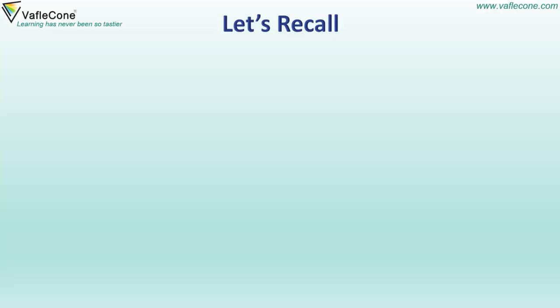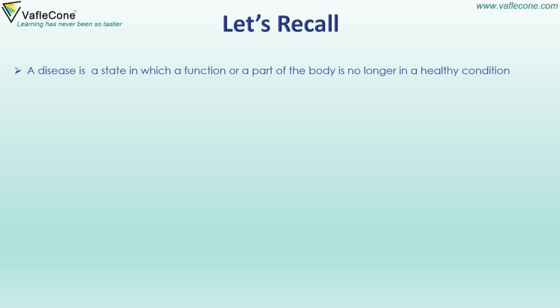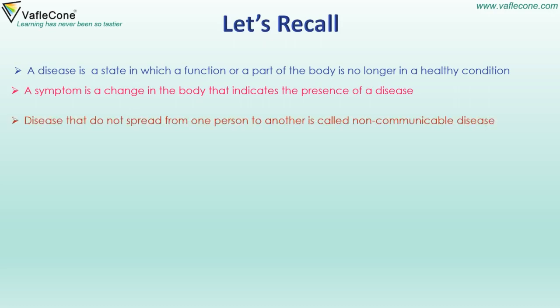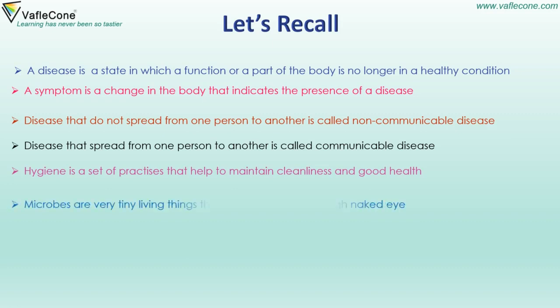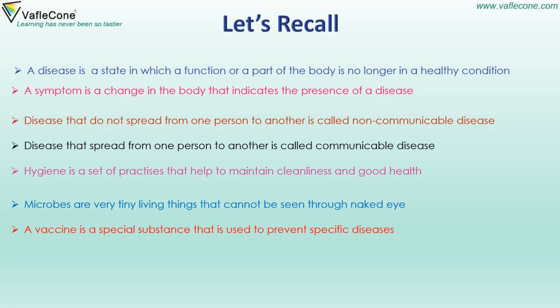Let's recall: A disease is a state in which a function or a part of the body is no longer in a healthy condition. A symptom is a change in the body that indicates the presence of a disease. Disease that does not spread from one person to another is called non-communicable disease. Disease that spreads from one person to another is called communicable disease. Hygiene is a set of practices that help to maintain cleanliness and good health. Microbes are very tiny living things that cannot be seen through naked eye. A vaccine is a special substance that is used to prevent specific diseases.